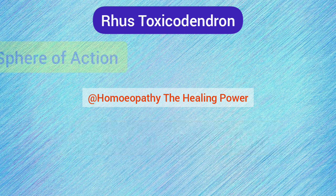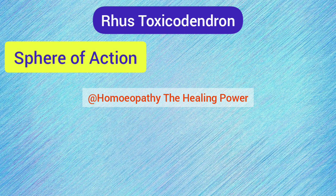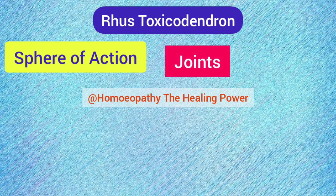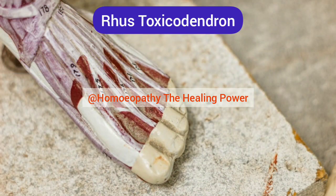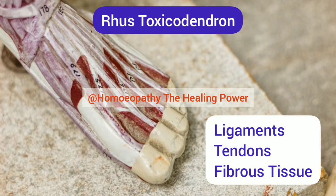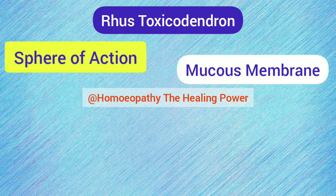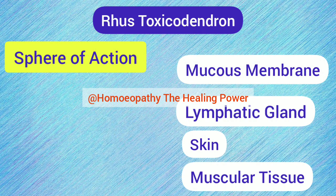Let's see the sphere of action of Rhus Tox. Rhus Tox specially acts upon joints, and within joints it has special action on ligaments, fibrous tissues, and tendons. Along with that, Rhus Tox also shows special action upon mucous membranes, lymphatic glands, skin, and muscular tissues.